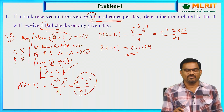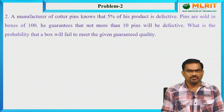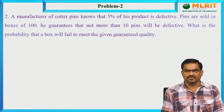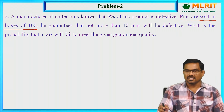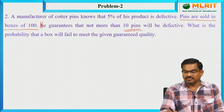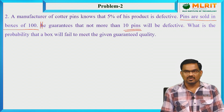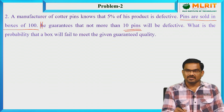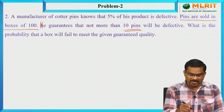If we have the value of λ, we can calculate the probability of any number of successes using Poisson Distribution. The next problem: a manufacturer of cotter pins knows that 5% of his product is defective. The pins are sold in boxes of 100, and he guarantees that not more than 10 pins will be defective. What is the probability that a box will fail to meet the given guaranteed quality?